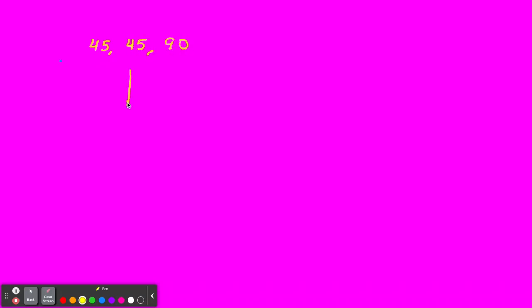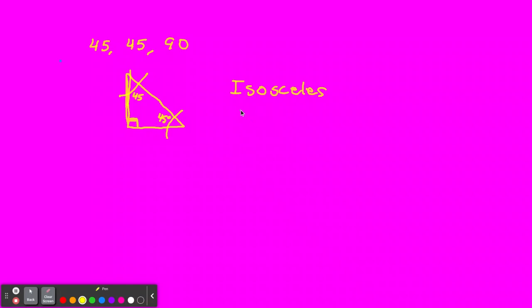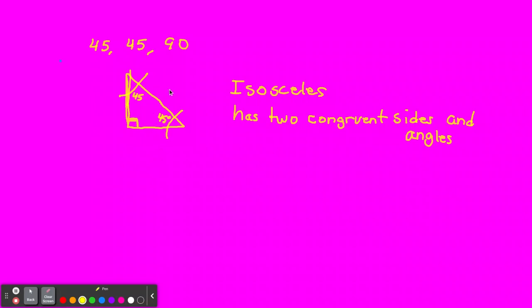We'll first start with the 45-45-90 right triangle. A right triangle has that 90-degree angle in that little box, so everything else would be 45 degrees. We have two angles that are equal — this is an isosceles triangle, where two sides are congruent. The thing to remember on a 45-45-90: the hypotenuse will always be based on the square root of 2, and the other sides would be 1. The ratio is 1, 1, square root of 2.